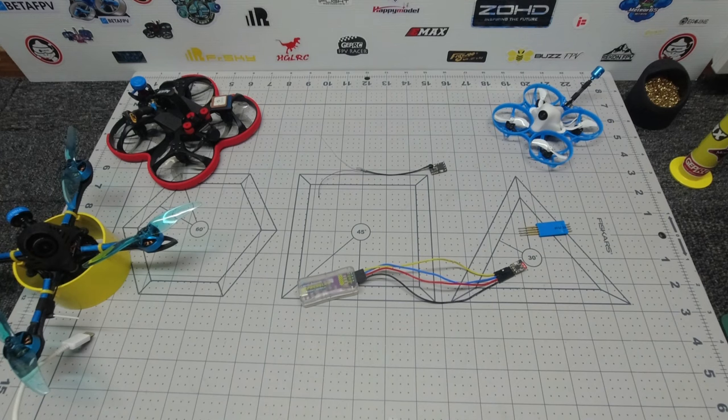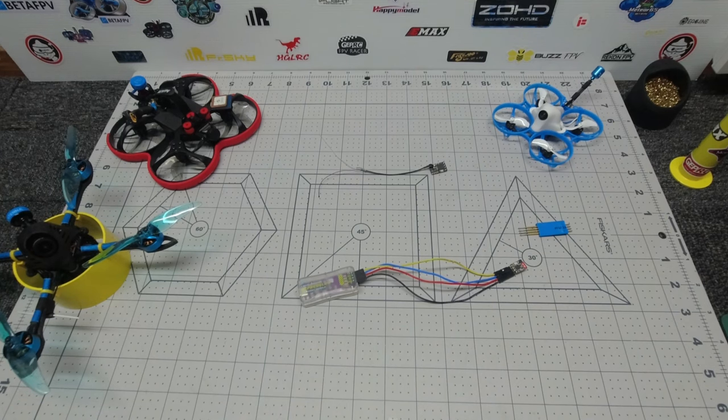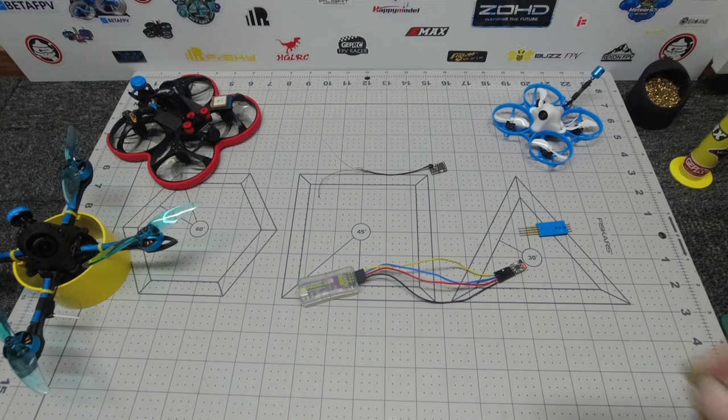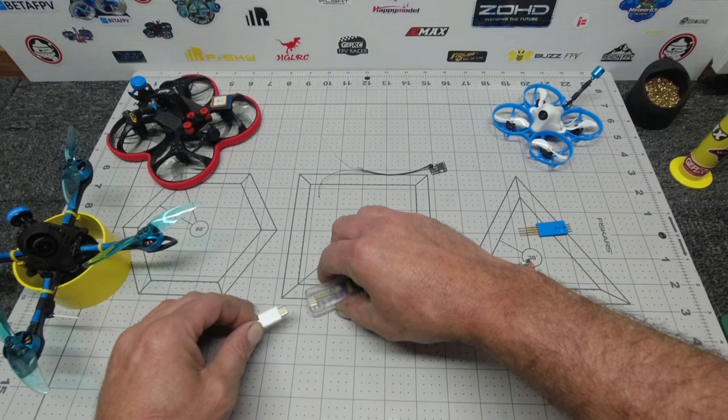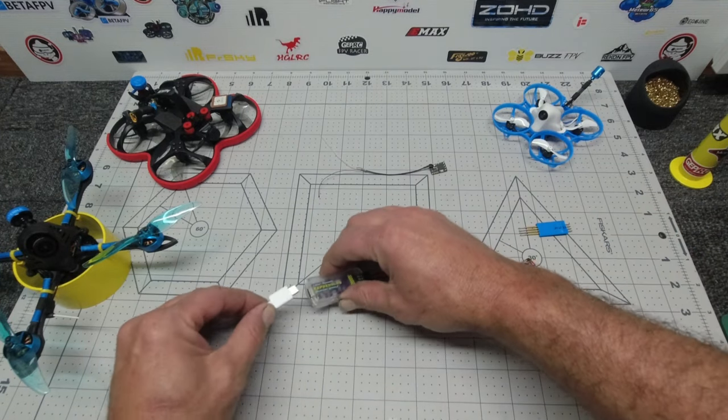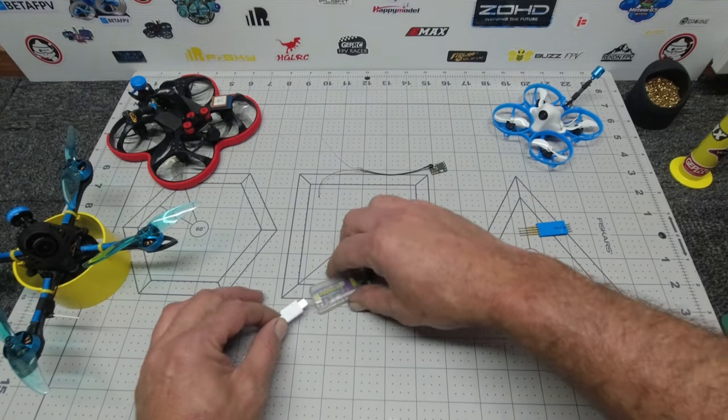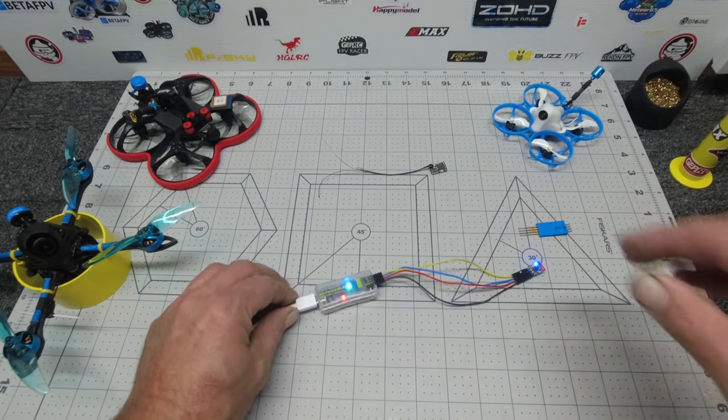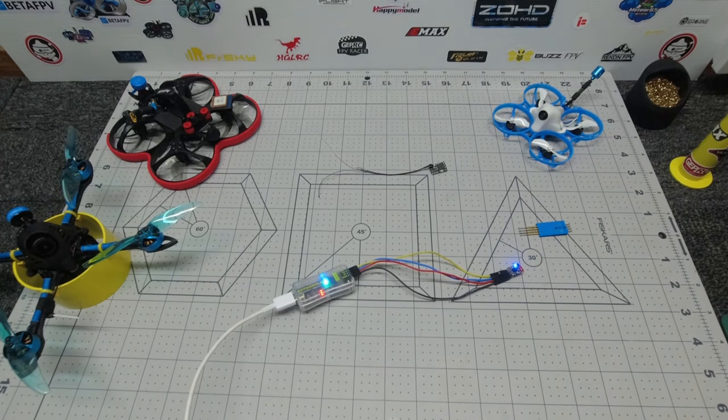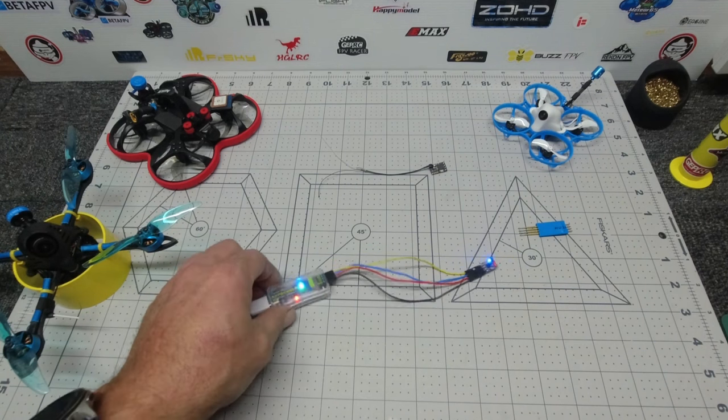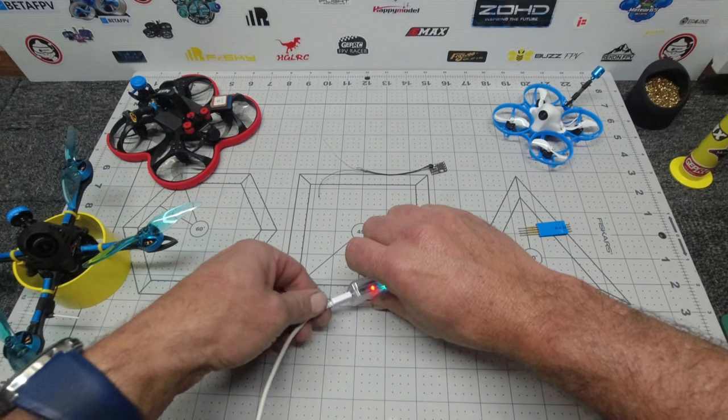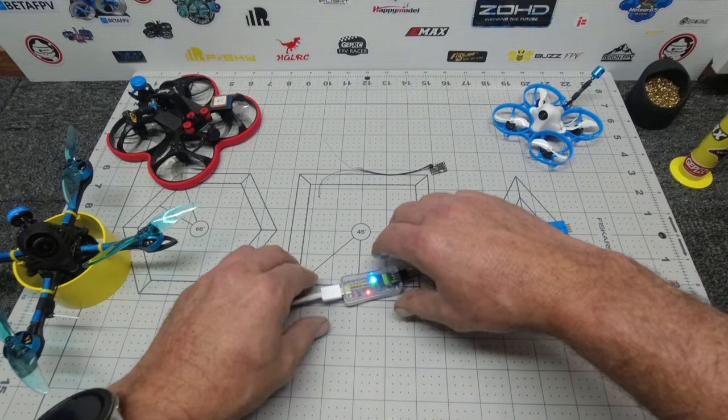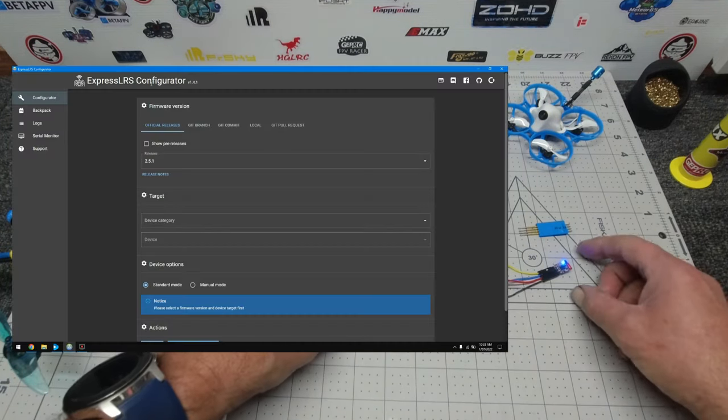I've just opened up my ExpressLRS configurator. This is version 1.4.1 - it was the latest a week ago so it may not be the latest, but it doesn't matter. Simply plug in your USB and hopefully you've done this before and your USB device is recognized by the configurator.